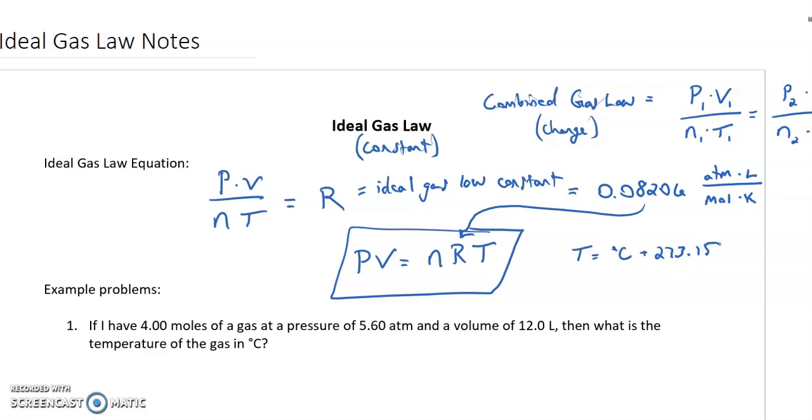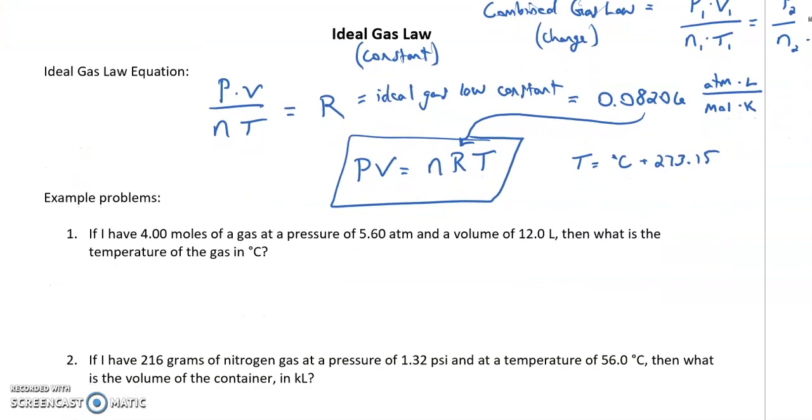So let's do a couple of practice problems together. The first one's an easier version. I've got two examples here, an easy one and then a harder one. The harder ones aren't that much more difficult, just adding extra steps. So the first thing I see: if I have four moles of a gas at a pressure of 5.60 atmospheres and a volume of 12 liters, then what is the temperature of the gas in Celsius? Now the nice thing is I can already see that all of these units match my desired units for my equation,